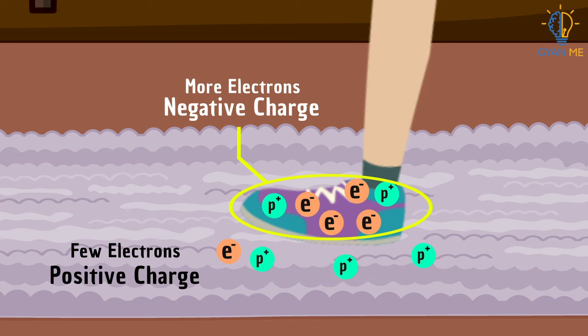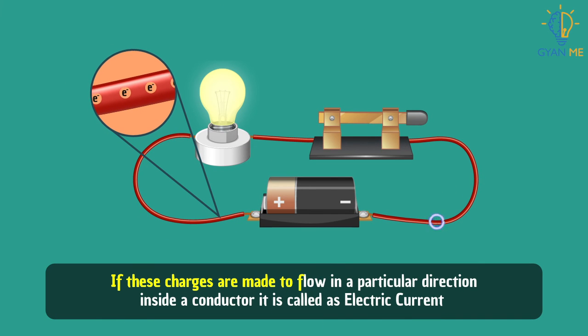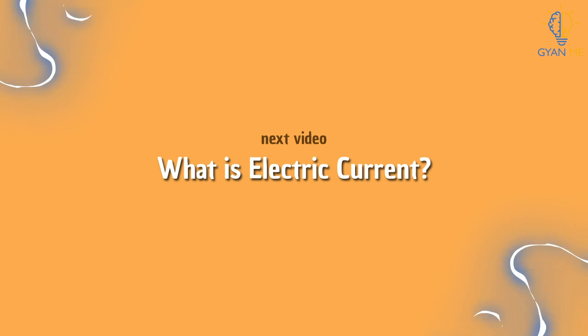Students, you already know the imbalance of charges on the surface of material is called static electricity. If these charges are made to flow in a particular direction inside a conductor, it is called electric current. In our next video, we will learn what is electric current.